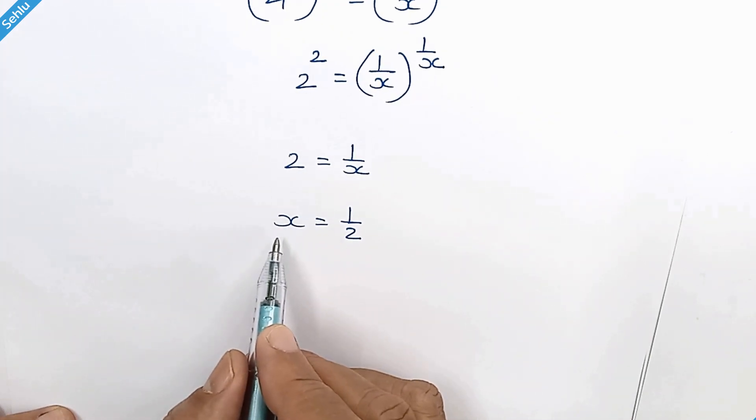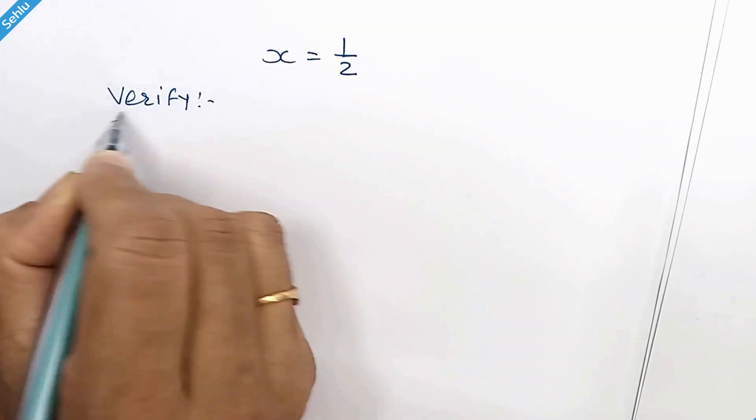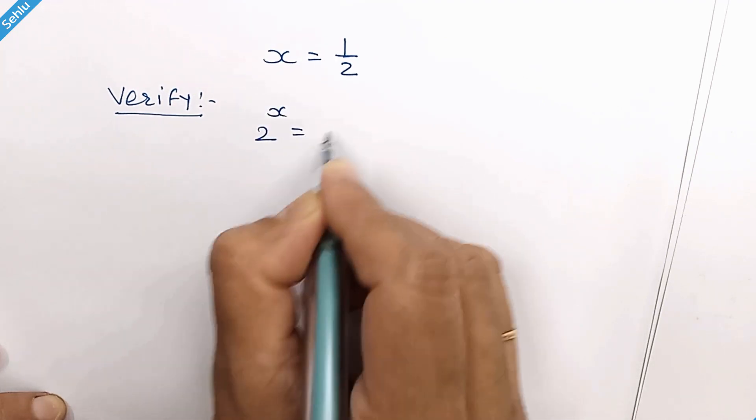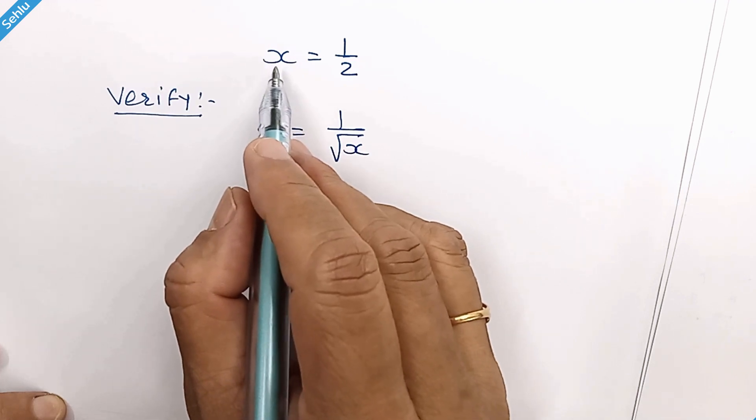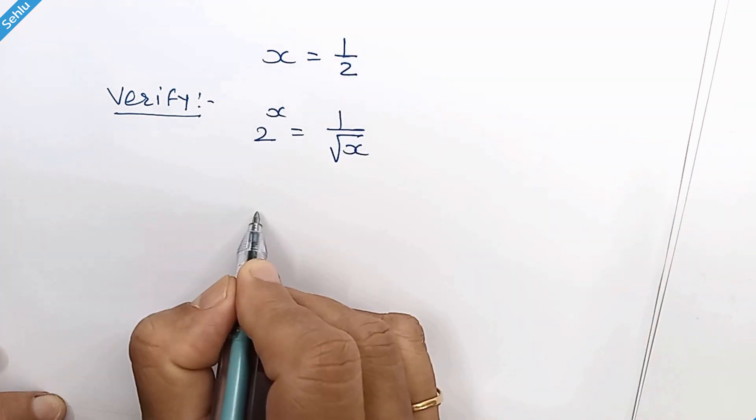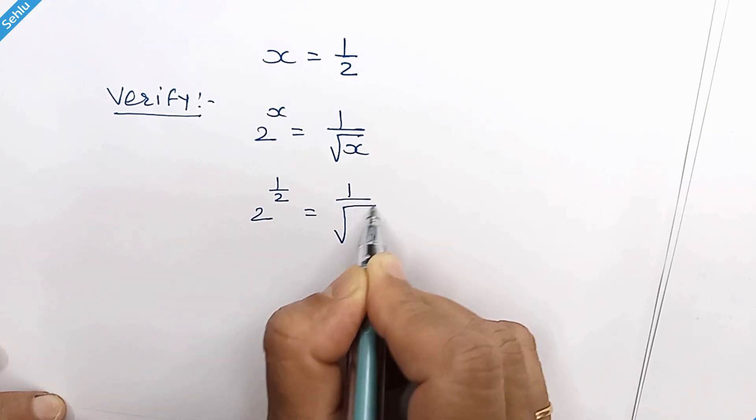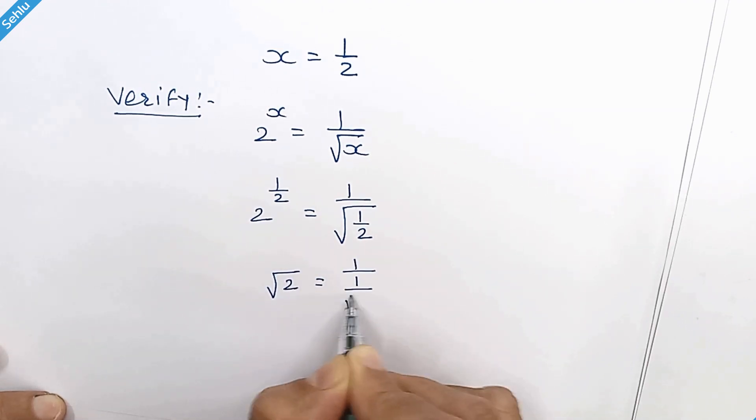Which needs to be verified. Question is 2 to the power x is equal to 1 over square root of x. Let's try 1 over 2 for x. This can be written as square root of 2.